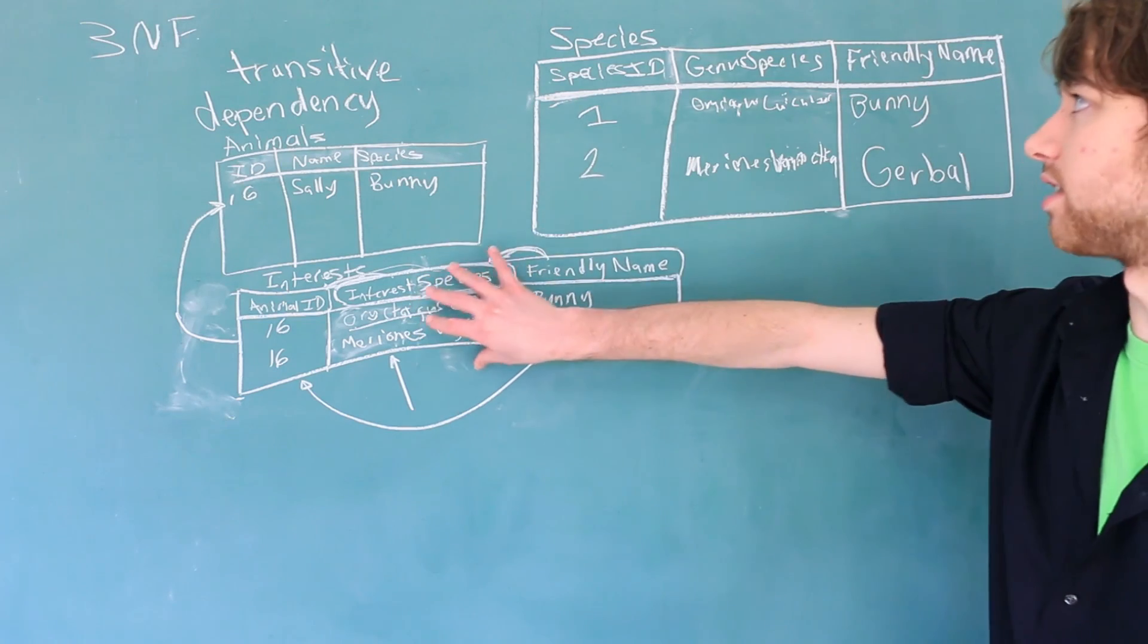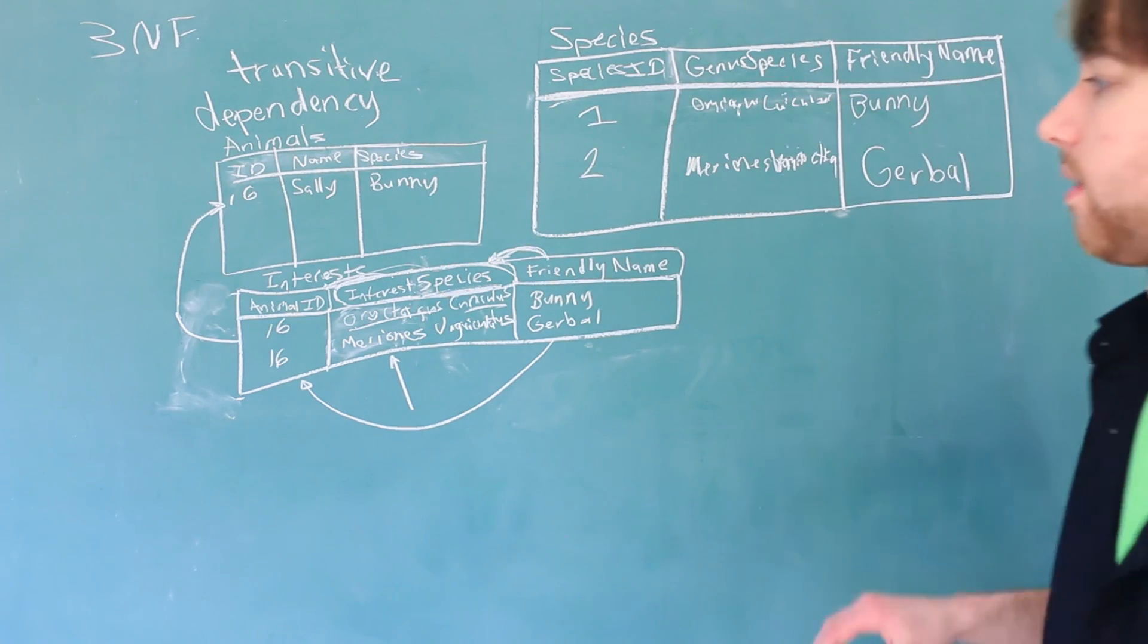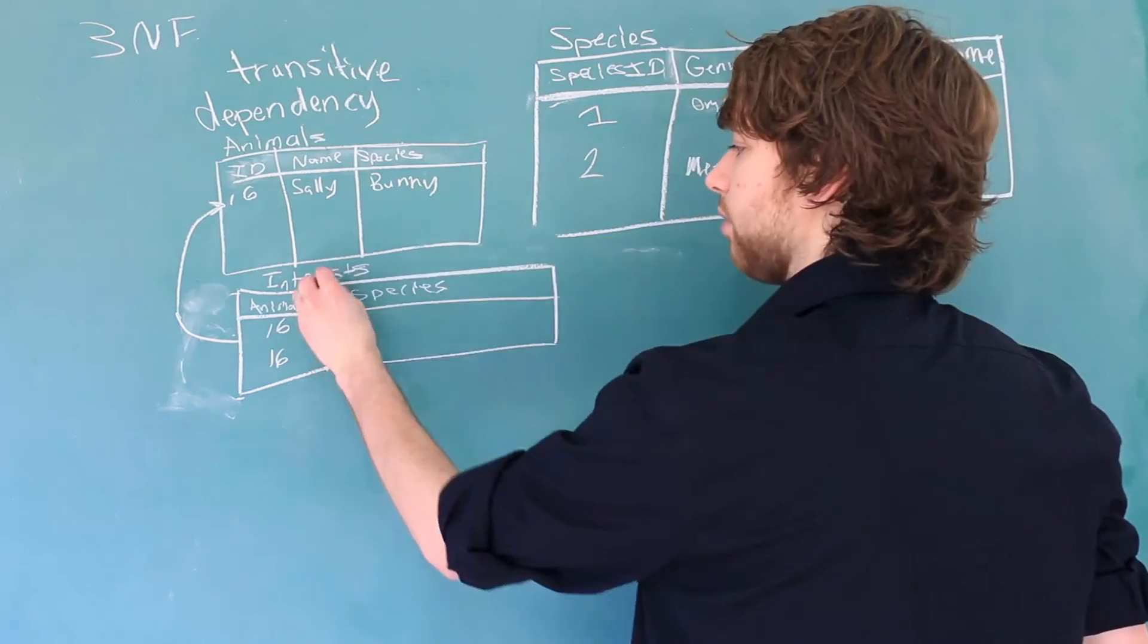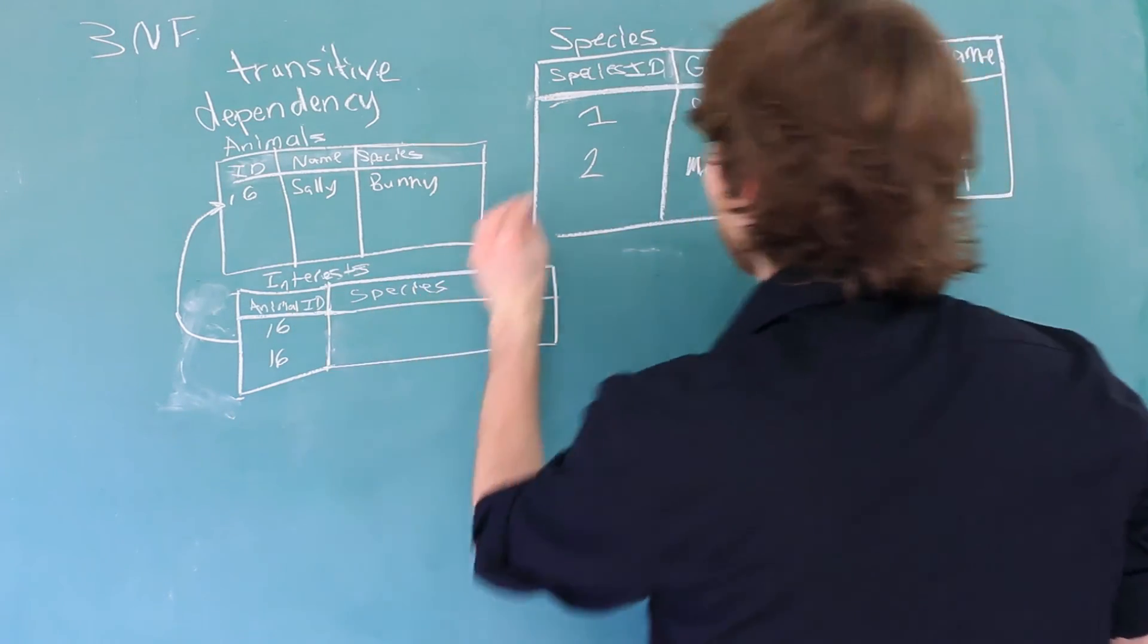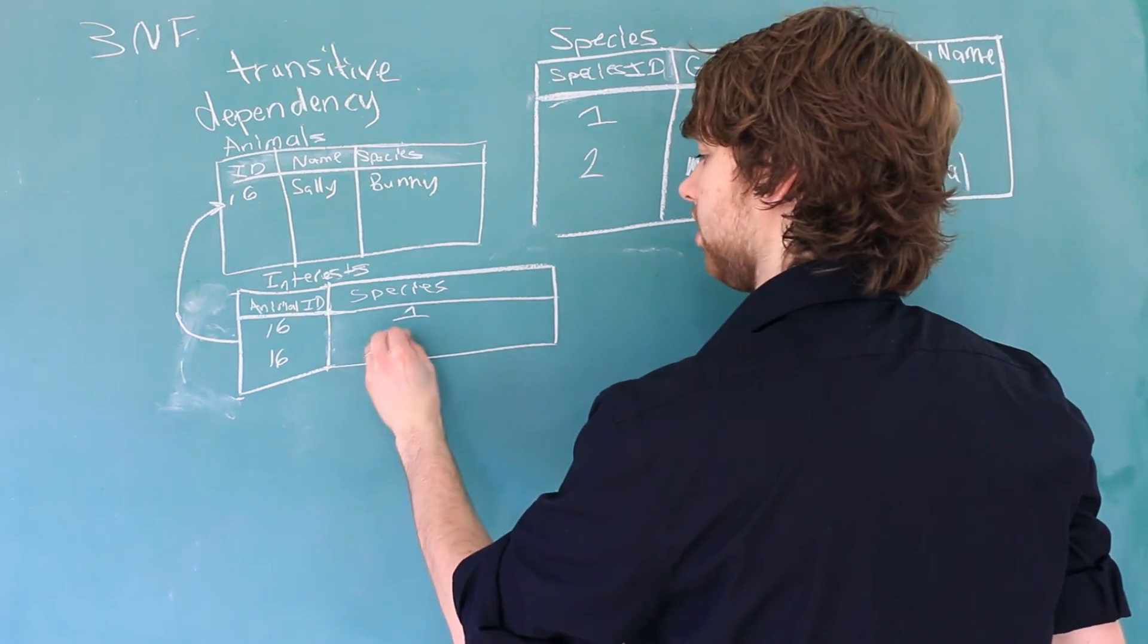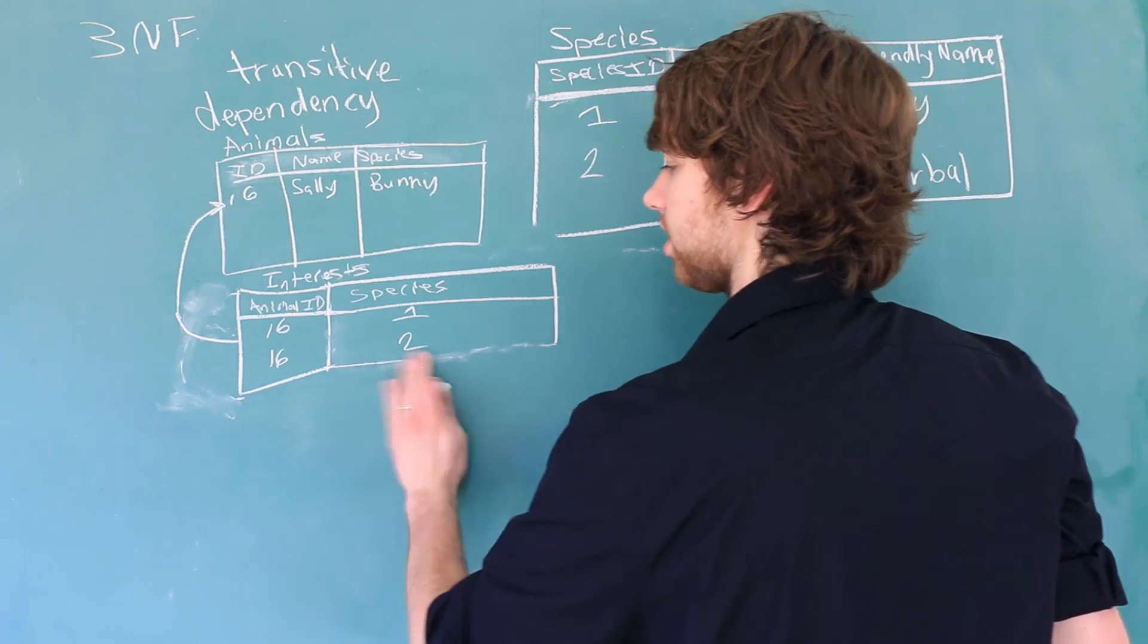Now we can add this as a row in this table. Now in here, we can replace this with a reference to the species. So we can get rid of this column and this column for now. And now we'll have a column species, which references the species this animal is interested in. So we would just say one and two.